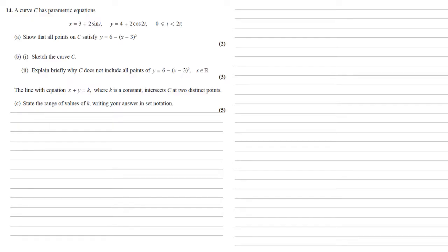Well, if we've got x plus y equals k, rearranging this gives us y equals k minus x, which we can put into our Cartesian formula for C. So replacing the y of k minus x gives us k minus x equals 6 minus the square of x minus 3.